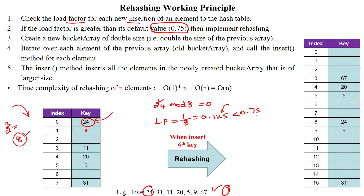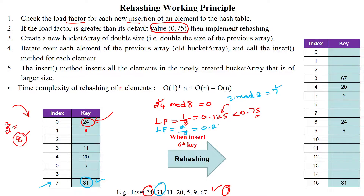Since the calculated load factor is smaller than the threshold value, no need to implement rehashing. I now insert the second element, 31. 31 mod 8 gives 7, so 31 is inserted into the 7th memory location. The load factor is now 2 divided by 8, which gives 0.25. Comparing with threshold 0.75, it is still smaller, so no rehashing needed.